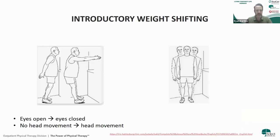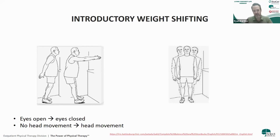Introductory weight-shifting exercises include forward-backward weight shifting and medial-lateral side-to-side shifting. You can progress by bringing feet together to narrow the base of support, trying with eyes closed to reduce visual feedback, and incorporating head movement for a vestibular component. As for foot positions, progressing from Romberg stance — feet together — to semi-tandem stance, then full tandem with one foot in front of the other, makes the challenge progressively harder.